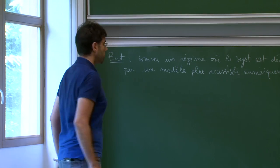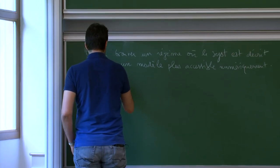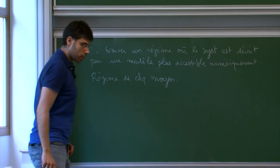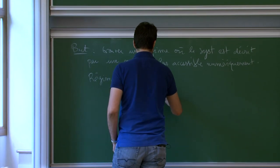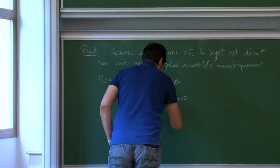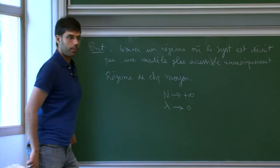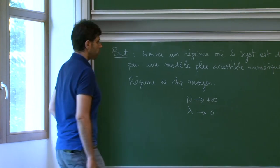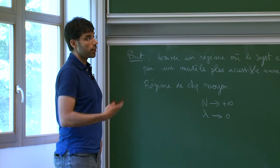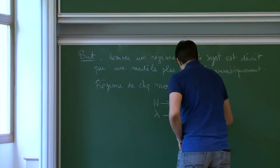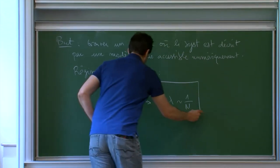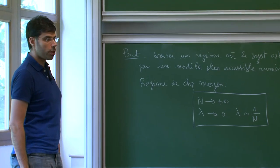In this course, we look at a particular regime called the mean-field regime. What does mean-field mean? It means we look at the limit where the number of particles is very large, and where, at the same time, the coupling constant λ is very small. But if we take it too small, it won't be very interesting. It must be small while still contributing in an interesting way — the interactions must play a role. In fact, the good regime is when λ behaves like 1 over the number of particles N — this is called the mean-field regime.